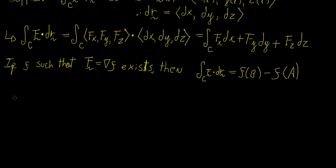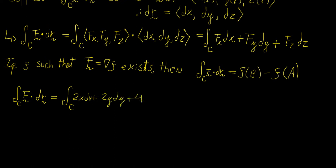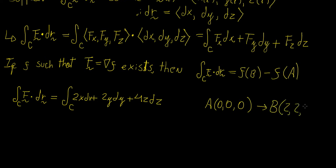Suppose we want to find the line integral of f·dr for the function 2x dx plus 2y dy plus 4z dz. We're going to evaluate the line integral from the point a at (0, 0, 0), the origin, to the point b at (2, 2, 2). Notice that we have not been given a path r, so we don't know what curve c is, but according to path independence, if this vector field is conservative and we can find a potential function f, we don't actually need to define a path.